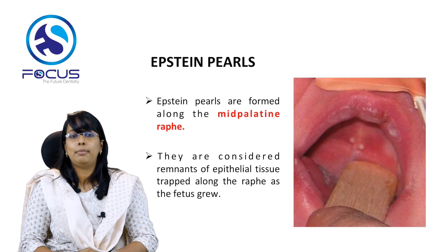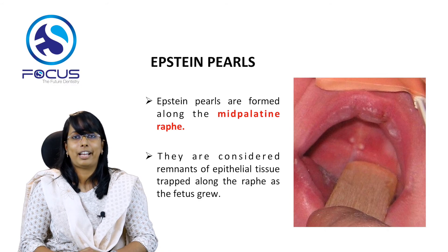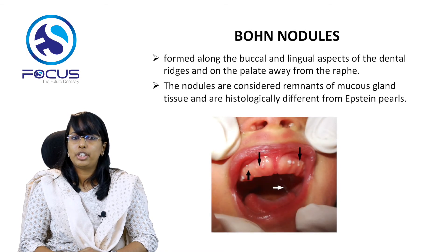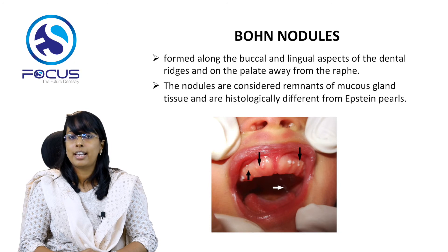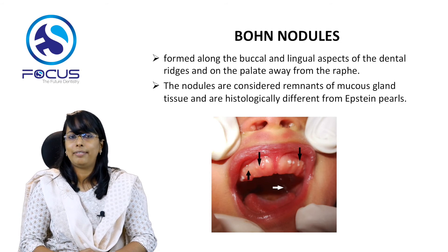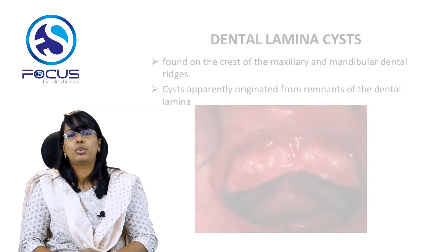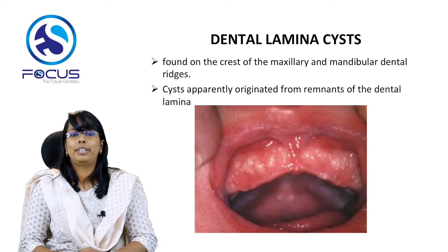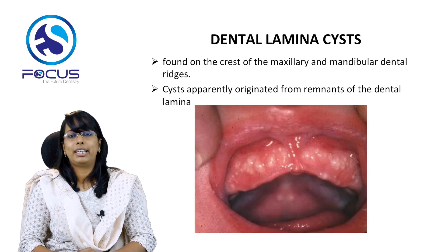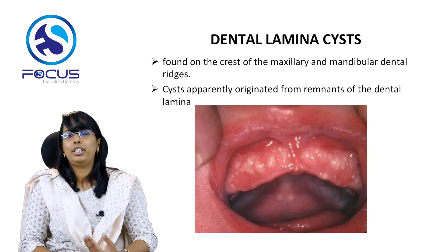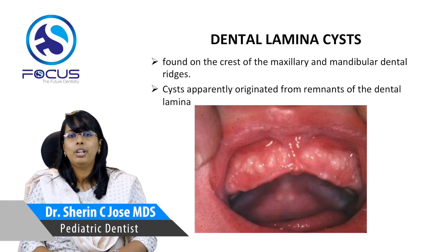Epstein pearls are formed along the mid-palatine raphe and are considered remnants of epithelial tissue trapped along the raphe as the fetus grows. Bohn's nodules are formed along the buccal and lingual aspects of the dental ridges on the palate, away from the raphe, and are remnants of mucous gland tissue — histologically different from Epstein pearls. Dental lamina cysts are present at the crest of the maxillary and mandibular dental ridges, apparently originating from remnants of the dental lamina. All three lesions are asymptomatic, resolve on their own, and require no treatment.